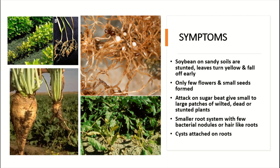In the case of attack on sugar beet, you can see that the sugar beet gives small to large patches of wilted, dead, and stunted plants. A smaller root system is developed with few lateral roots and bacterial nodules on the hair-like root systems.